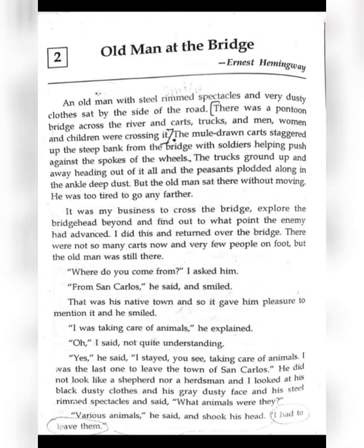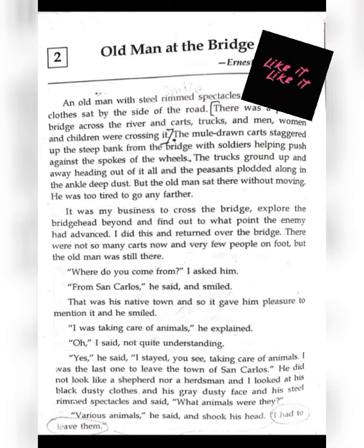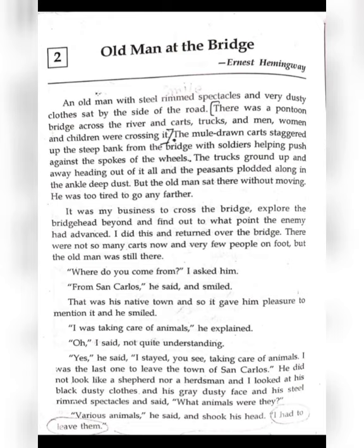An old man with steel-rimmed spectacles and very dusty clothes sat by the road. We come to know the description of the man — he is wearing steel-rimmed spectacles, his clothes are dirty, and he is sitting by the road. There is a pontoon bridge across the river, and carts, trucks, men, women, and children were crossing it. A pontoon bridge is made of large hollow containers filled with air, used extensively during war.